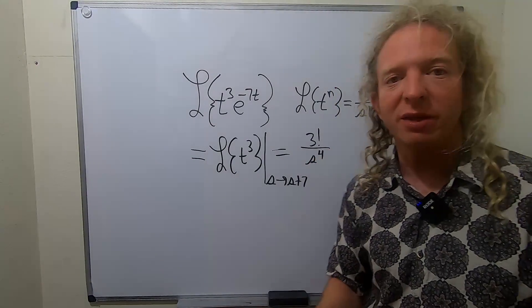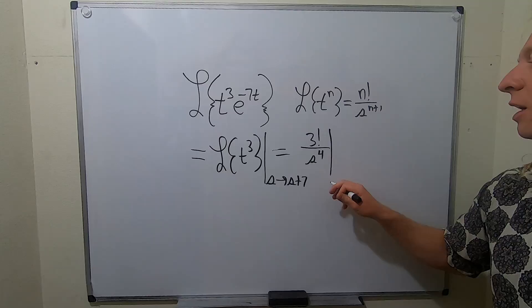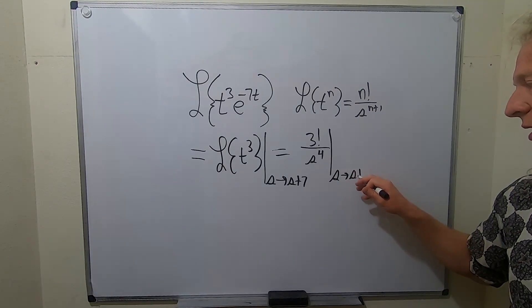And we're almost there. We just need to write the shift. So we have the line, and we're going from s to s plus 7.